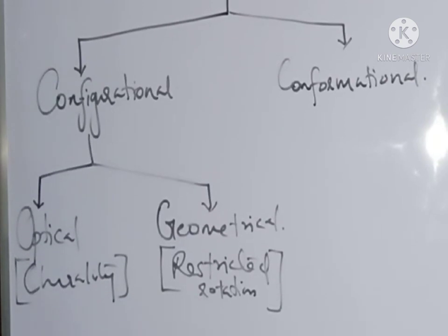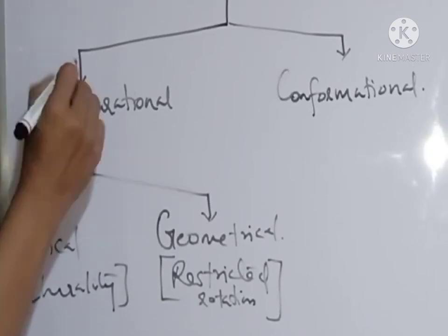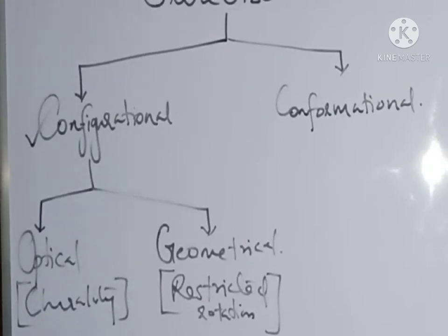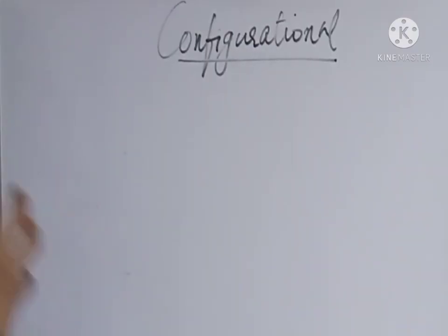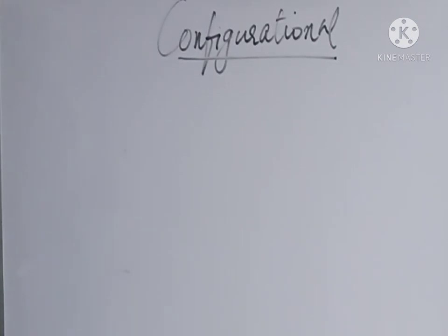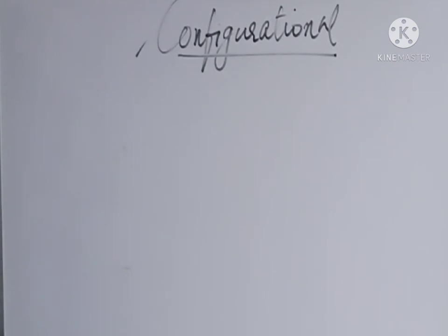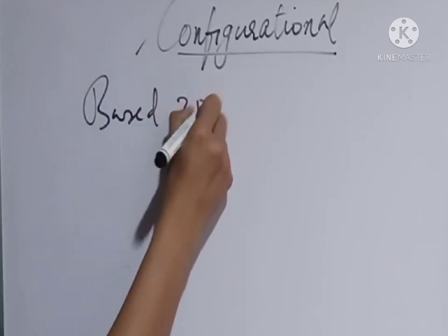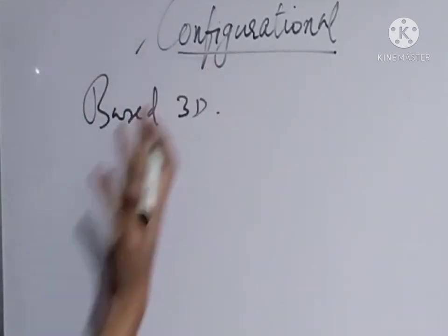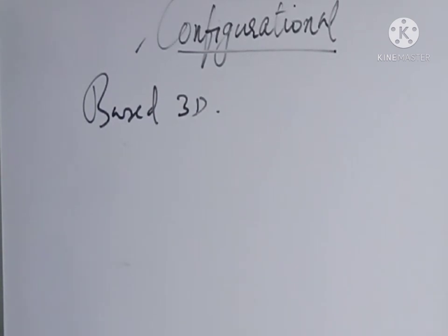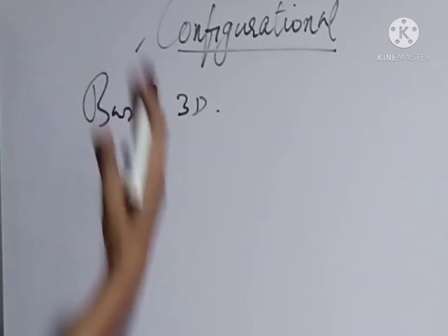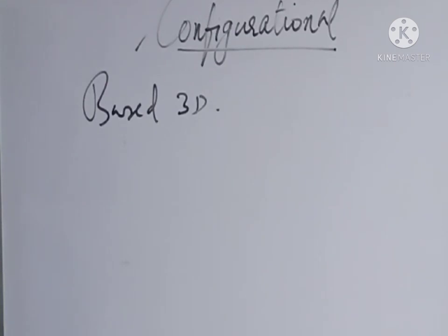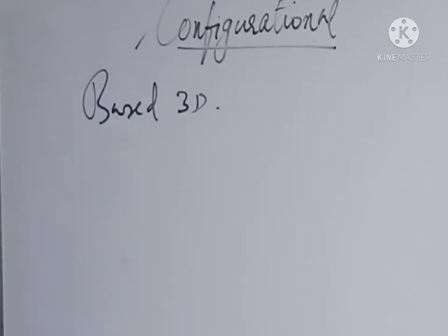Now, let us study the details of configurational isomers. All stereoisomers are based on the spatial arrangement of the molecules, that is the three-dimensional structures of the molecule. Before going into the details of conformational isomers, let us learn how to draw the three-dimensional structure of these molecules on a piece of paper.